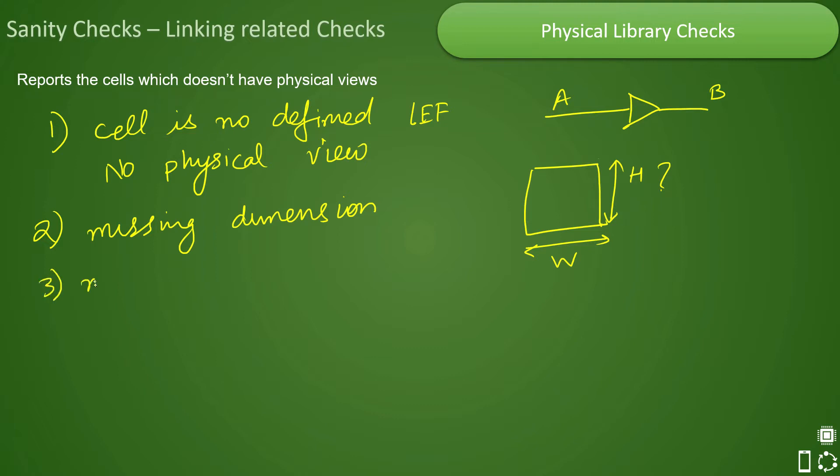Another possible case could be that the cell is defined, dimension is also present, pins are there, but you do not know what is the direction of the pin. Sometimes pins are not defined. Sometimes you have pins defined but the direction of the pin is not there. You know there are two pins present in the cell that are rectangular in shape, but you do not know which one is input and which one is output.